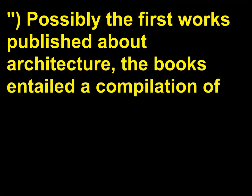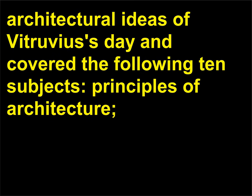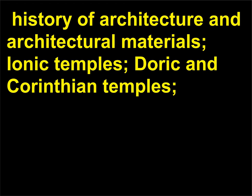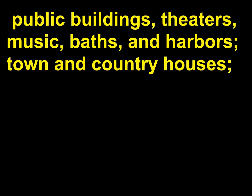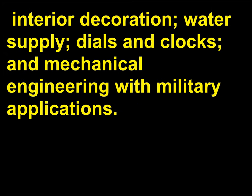The ten books covered the following subjects: principles of architecture; history of architecture and architectural materials; Ionic temples; Doric and Corinthian temples; public buildings, theaters, music, baths, and harbors; town and country houses; interior decoration; water supply; dials and clocks; and mechanical engineering with military applications.